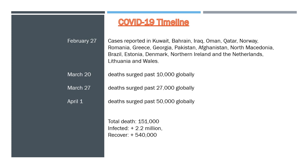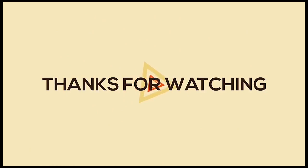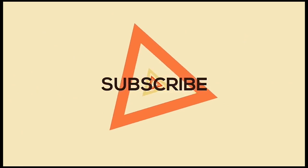On April 1, UN Chief António Guterres warned the coronavirus pandemic presents the world with its worst crisis since World War II, as the global total of confirmed COVID-19 cases reached 1 million and the worldwide death toll topped 50,000.